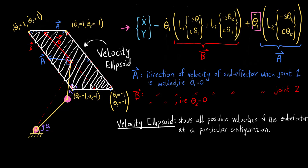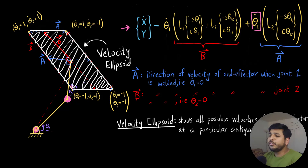At this particular position shown in the picture, with these particular θ₁ and θ₂ angles, if someone asks whether the robot can achieve a velocity outside the ellipsoid, the answer is no — because our motors aren't powerful enough. With motors outputting an angular velocity of positive or negative one radian per second, we can only reach any velocity within this velocity ellipsoid.